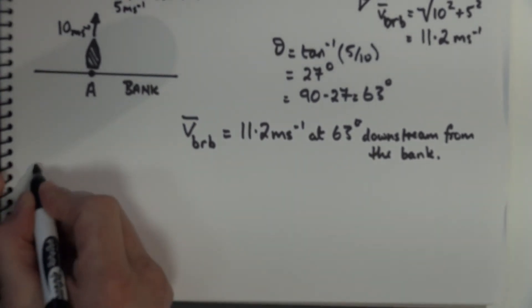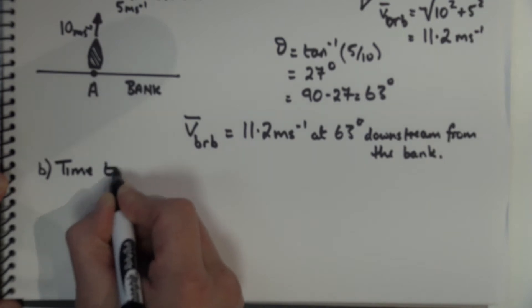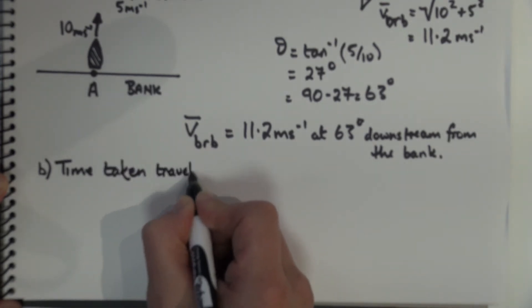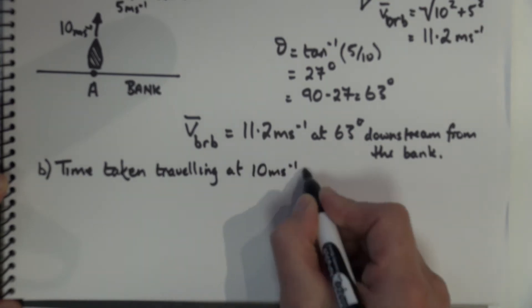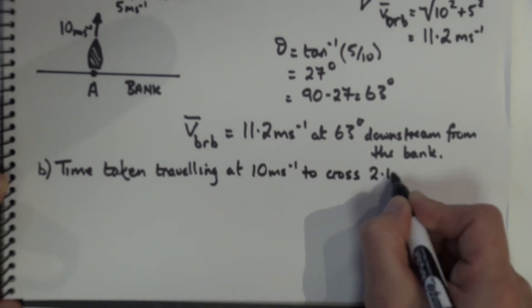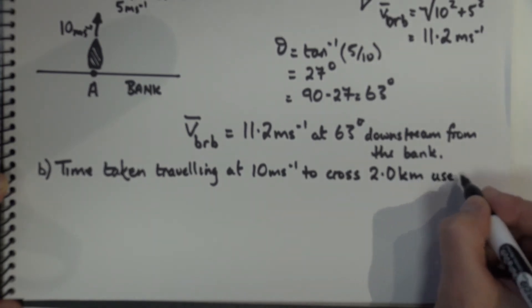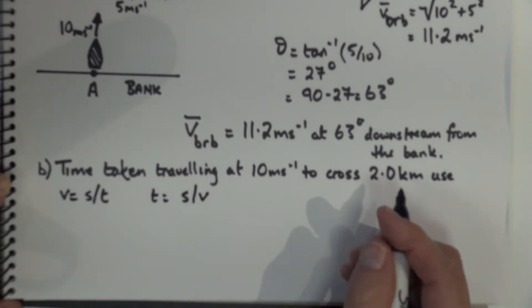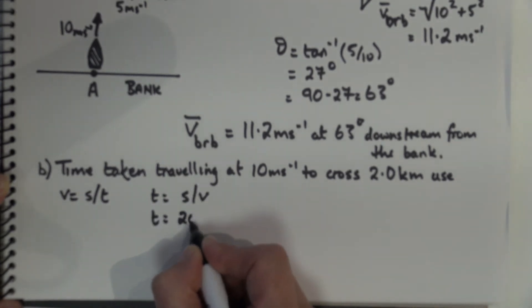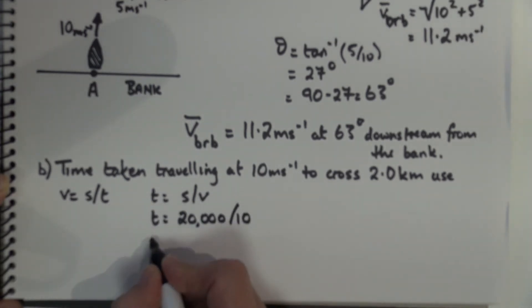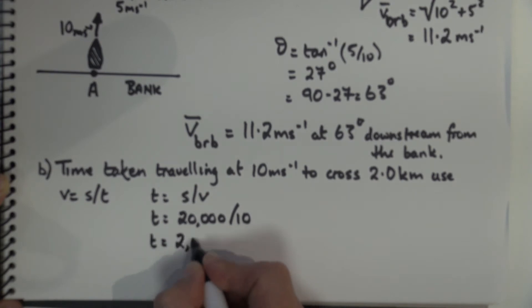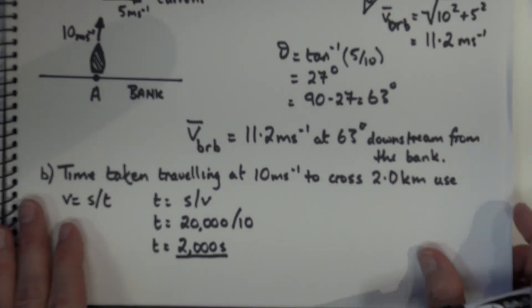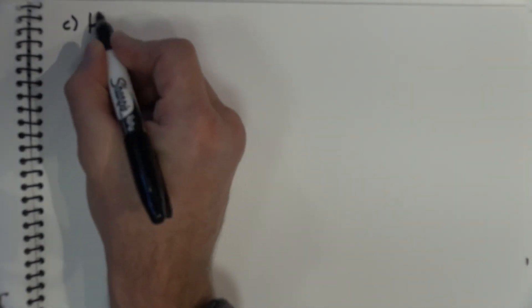Now let's look at question B, which asks for the time taken to cross the river. We know the boat is travelling at 10 metres per second and the river is two kilometres wide. Using speed equals distance over time and rearranging, the time equals distance divided by speed, which is 2,000 metres divided by 10, giving 2,000 seconds — just under an hour.